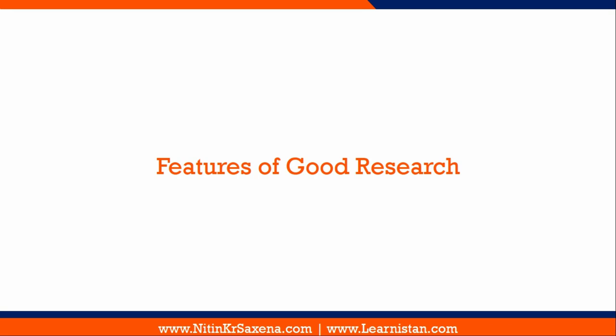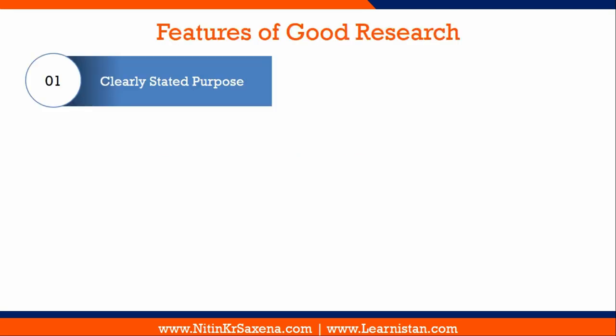The next topic is features of good research. The first feature is clearly stated purpose — a good research should have a very clearly stated purpose. This not only refers to the objective of the study, but also precisely defines the scope and domain of the study. The variables and constructs being investigated, like service delivery models, quality standards, and inventory management, need to be defined in clear and precise terms.